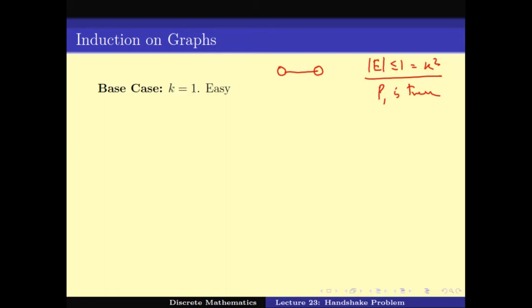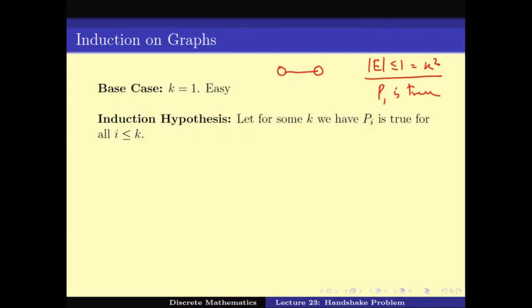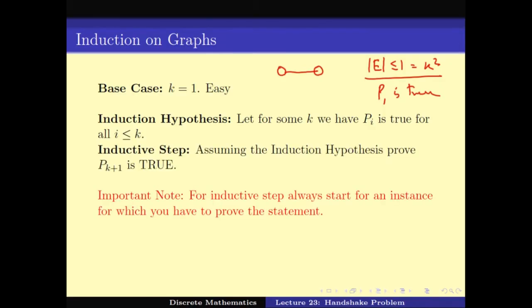The base case k equals 1 is not hard to see. Now the induction hypothesis is that P(1) through P(k) are all true. Using this, we want to prove that P(k+1) is true. This is a very important note: whenever you have to prove by induction, you should always start with an instance of P(k+1) — what you want to prove — not try to start with an instance of P(k) and construct P(k+1).